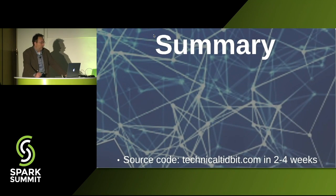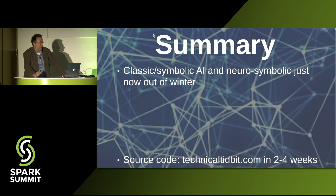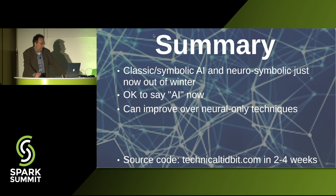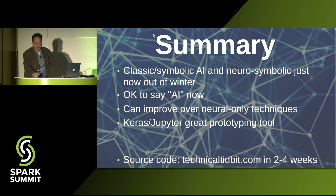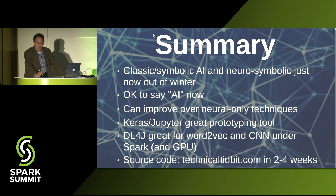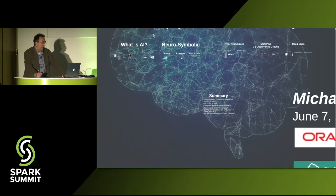For summary: I'm still working to get the source code posted to oracle.com — it will take another two to four weeks — so you can monitor my personal blog, technicaltidbit.com, for an announcement. We went through a symbolic winter and a neurosymbolic winter, but there's a lot to be gained by combining symbolic techniques — classic AI — with neural networks, and that combination is better than neural-only techniques. I recommend Keras and Jupyter as a great prototyping tool to rapidly try out new ideas. For deep learning on Spark, DL4J is a free option that supports GPU on Spark and gives you a way to read in the Google News model.